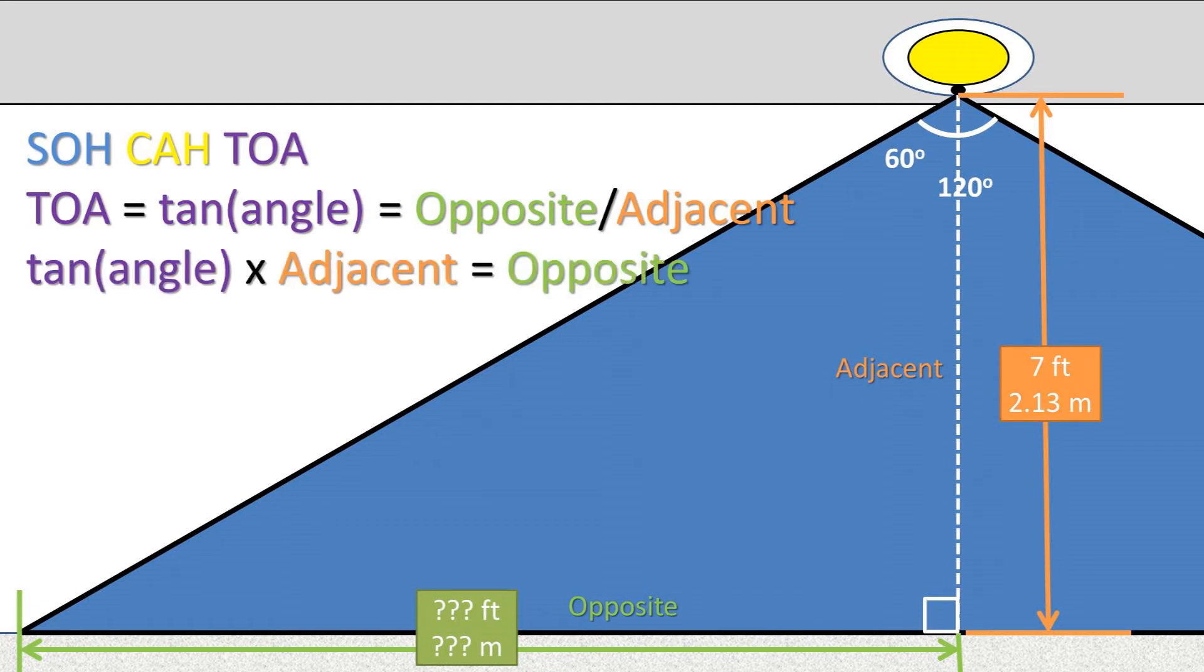To get what we are solving for opposite to one side, we must multiply both sides by the adjacent side length. Now we can plug in all of our given values.